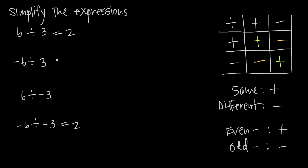If our signs are different — we have a negative 6 and a positive 3 — then negative 6 divided by positive 3 is going to give us a negative result, because we have a negative divided by a positive. Those are different signs, so the result is going to be negative. Here we have a positive 6 and a negative 3 — different signs, one positive, one negative — so positive 6 divided by negative 3 is also going to give us negative 2. Because the signs are different, we're going to get a negative answer.